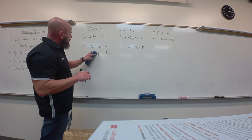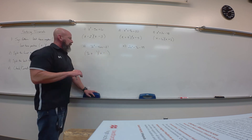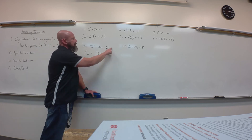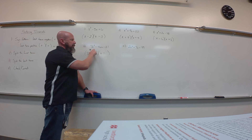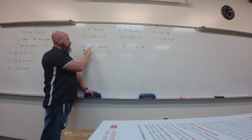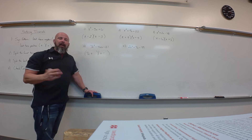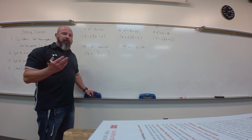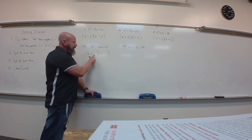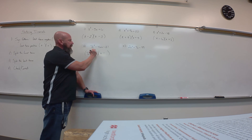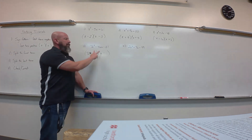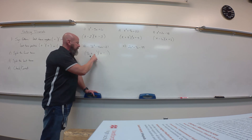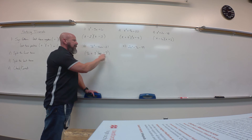Here's part of my thought process: there's no common factor in 7, 46, and 21. If I want to use 7 and 3 from the back, the 7 cannot go next to the 7x term — that would create a common factor. Since I didn't have a common factor in the beginning, I won't have one in the factored form. So if it works with 7 and 3, the 7 from the back has to go in the second binomial.